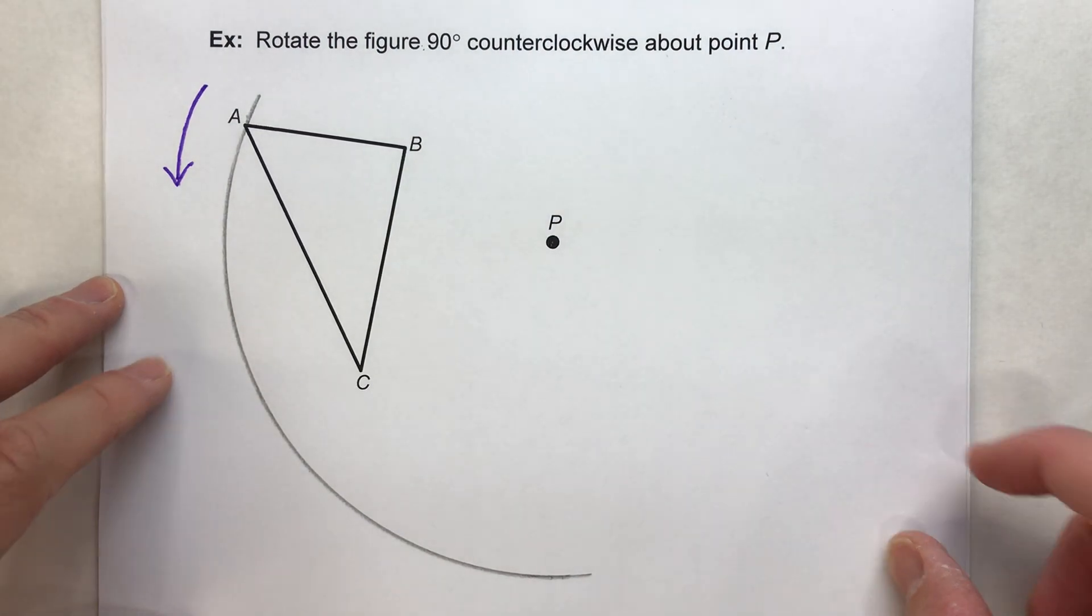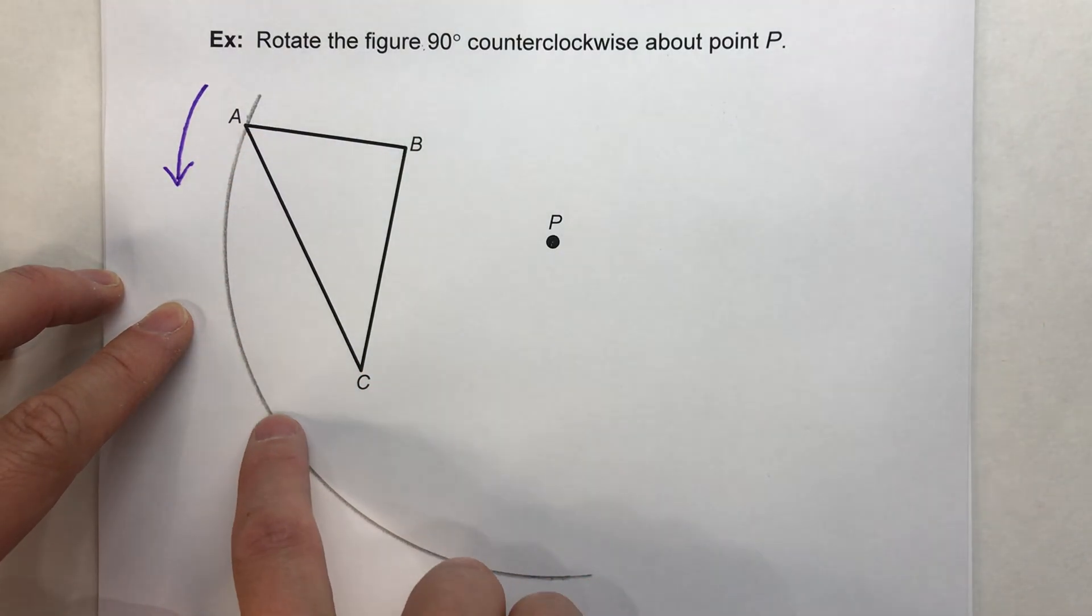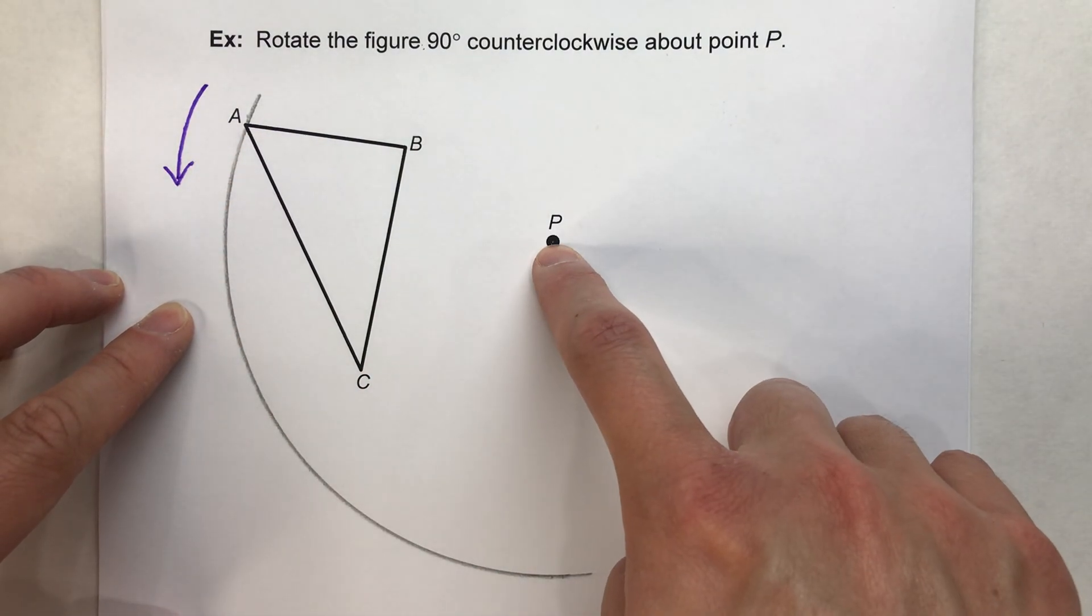So we know it's rotating 90 degrees counterclockwise about point P. So that means A is going to follow this path counterclockwise around point P.